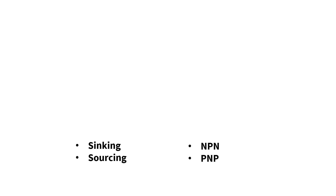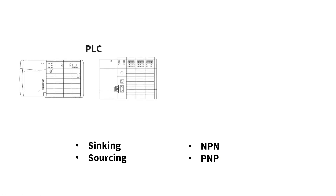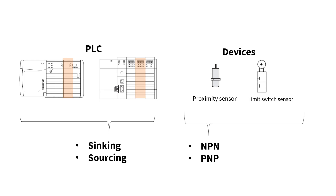While you are learning about sinking and sourcing, you might read the two terms NPN and PNP. Both are used when working with PLCs and sensors. However, for simplicity we refer to PLC I/O modules as sinking and sourcing, and sensors as NPN or PNP sensors. Both terminologies are correct and you can see them often in documentation.